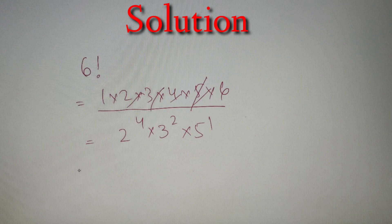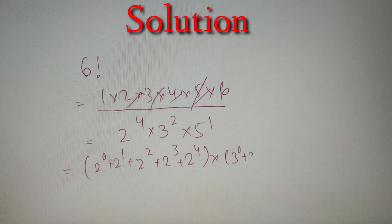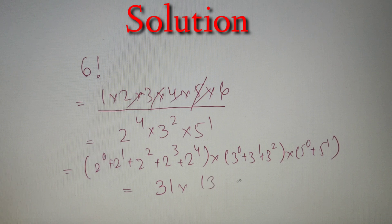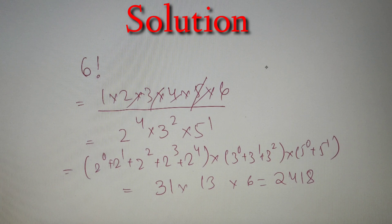The sum of factors is (2⁰ + 2¹ + 2² + 2³ + 2⁴) × (3⁰ + 3¹ + 3²) × (5⁰ + 5¹). The first bracket equals 2⁵ − 1 = 31, the second bracket gives 1 + 3 + 9 = 13, and the third gives 1 + 5 = 6. So the sum of factors is 31 × 13 × 6 = 2418. Therefore the sum of reciprocals of all factors of 6! is 2418/720.